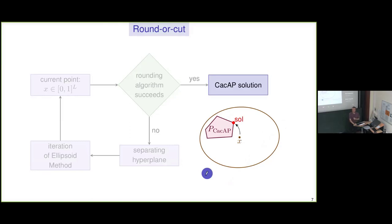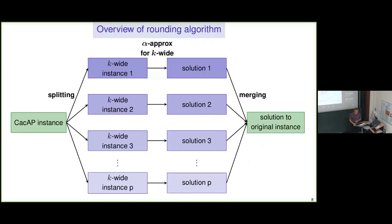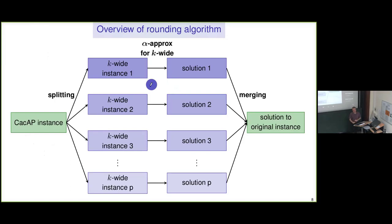Because the ellipsoid method runs in polynomial time, the number of iterations is polynomial until eventually the rounding procedure works out. Here's how the rounding procedure works: start with a connectivity augmentation instance, split it into smaller sub-instances that are each K-wide, then apply the alpha-approximation to each. If it fails for one, retrieve a separating hyperplane and go back to the round-or-cut. If it succeeds for all, merge the solutions and return the merged solution.